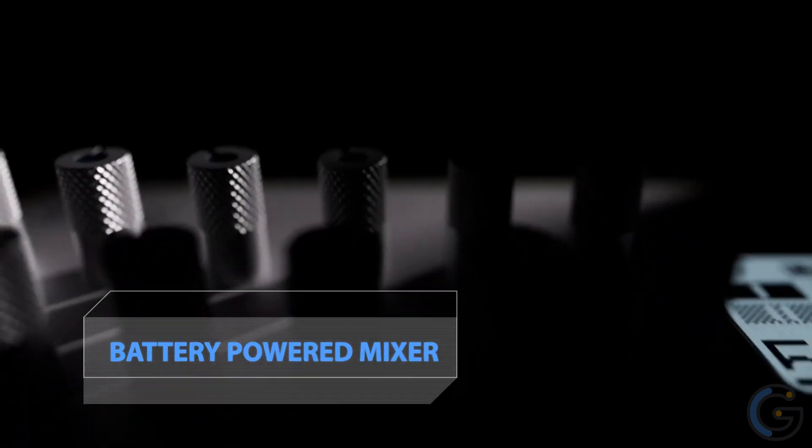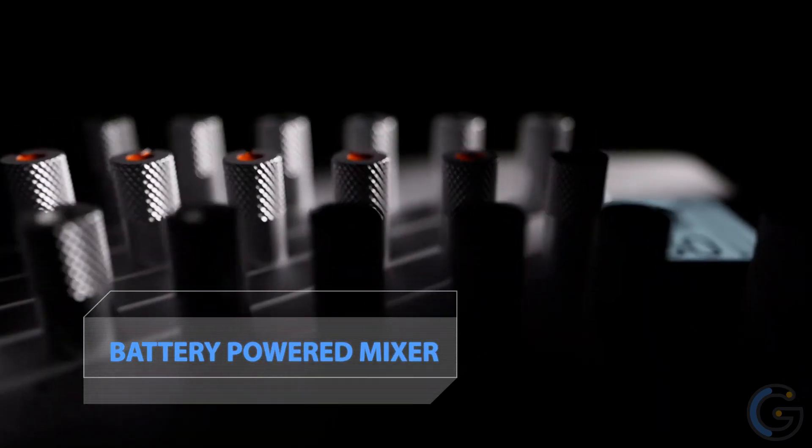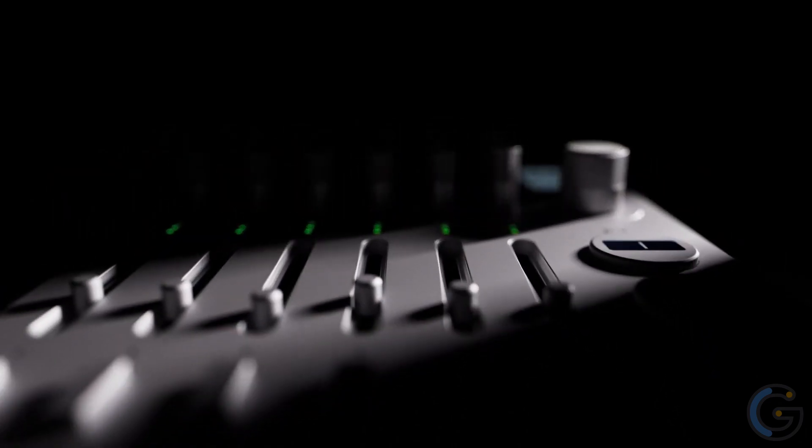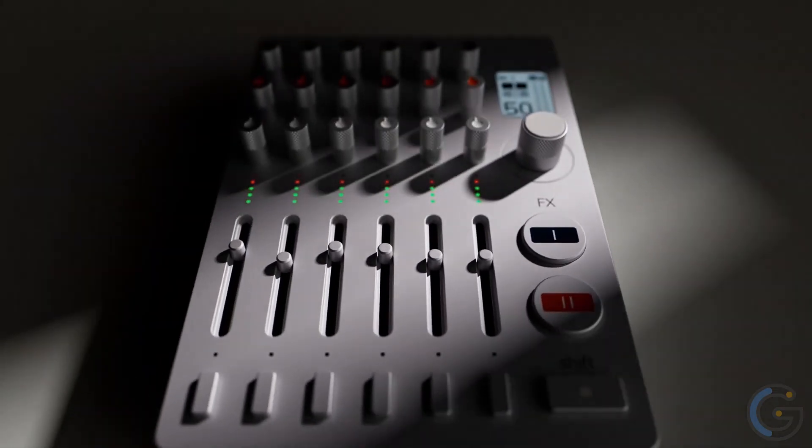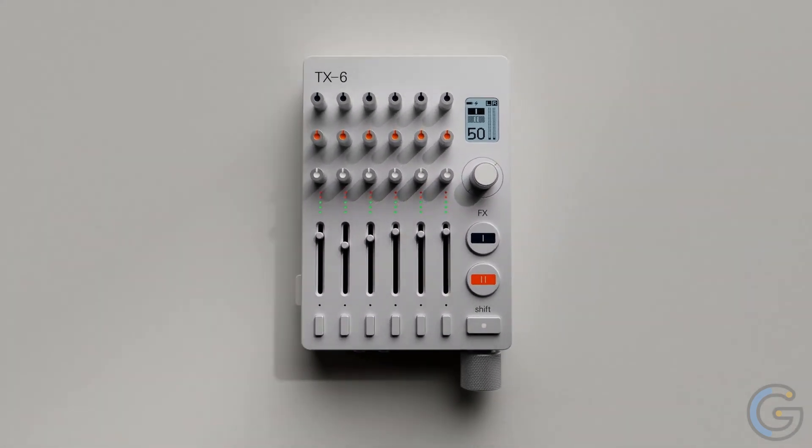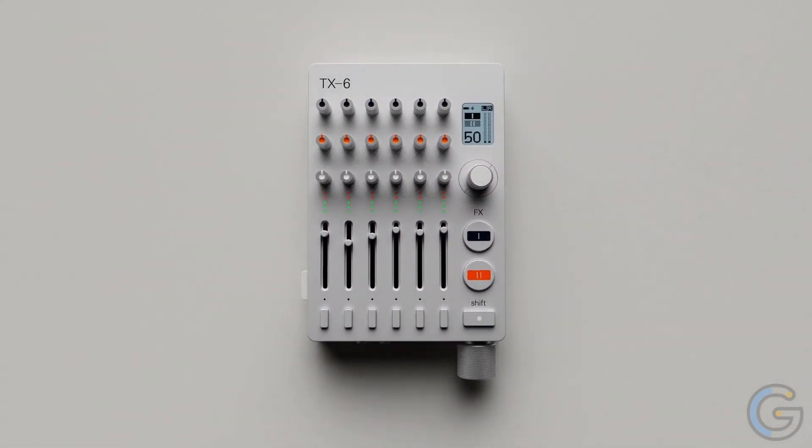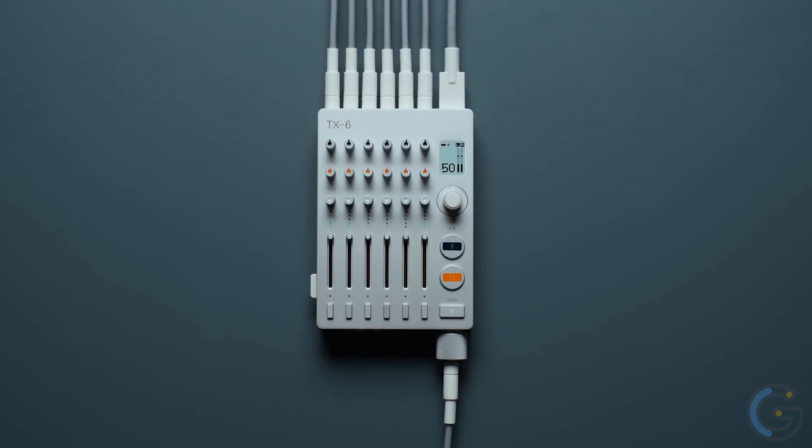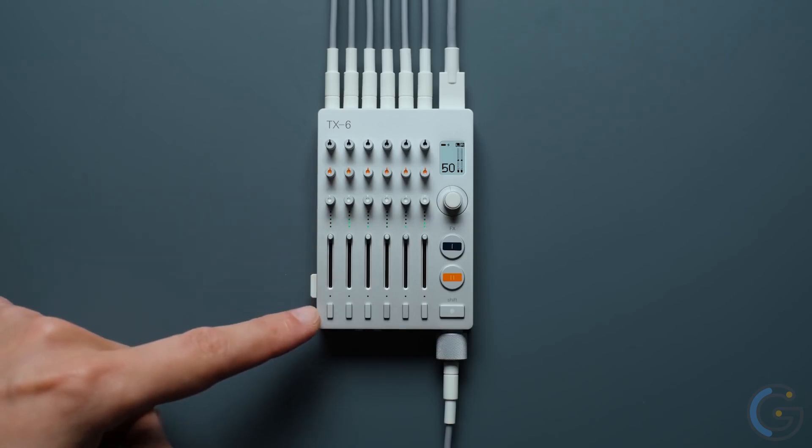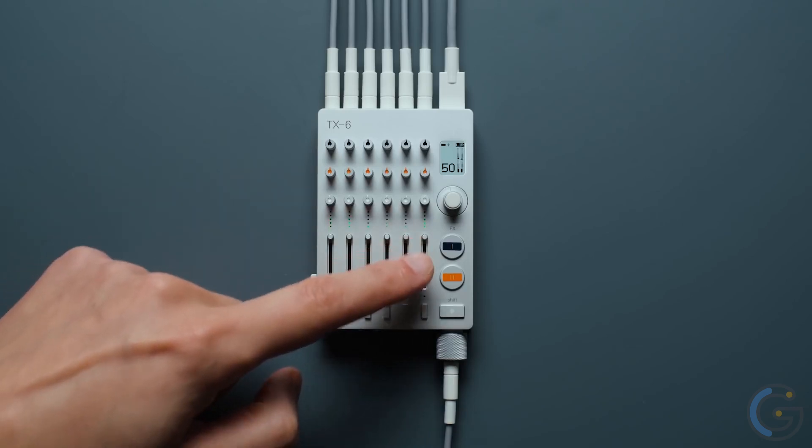Teenage Engineering TX-6 Battery Powered Mixer. Take the Teenage Engineering TX-6 Battery Powered Mixer anywhere. It also functions as a portable synthesizer and sequencer with four oscillator waveforms and four synthesized drum sounds. Best of all, use tempo sync to stay on the beat, making it perfect for beginners. With six channels of audio, it's a great way to mix your own music or record your band.